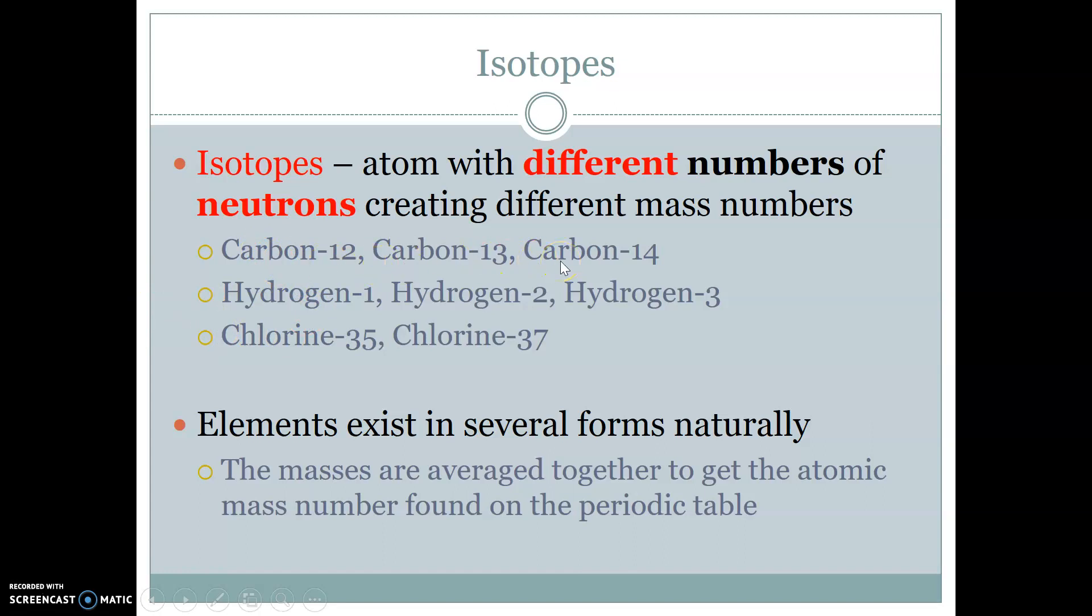which means just that it has a different number of neutrons. Carbon always has six protons, so carbon-12 would have six neutrons, 13 would have seven, 14 would have eight. So naturally, elements exist in a few different forms. And so we average all of those masses together to get the atomic mass number that you see on the periodic table. And that's based on how frequently the isotope appears in nature.